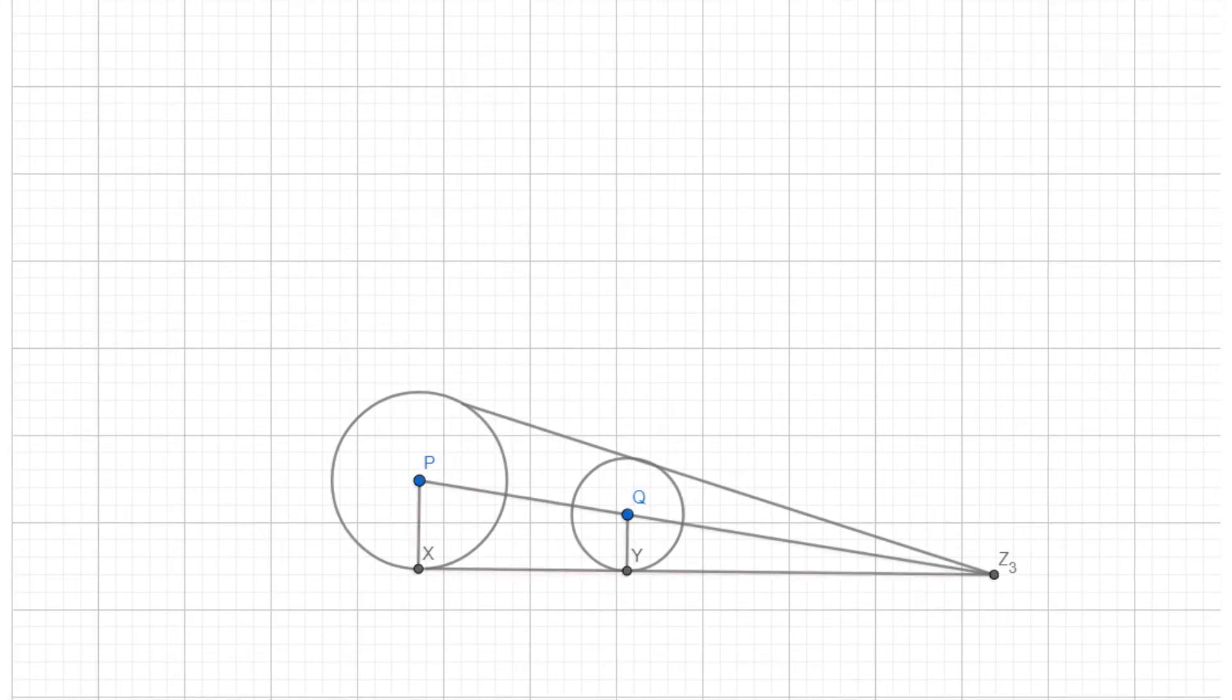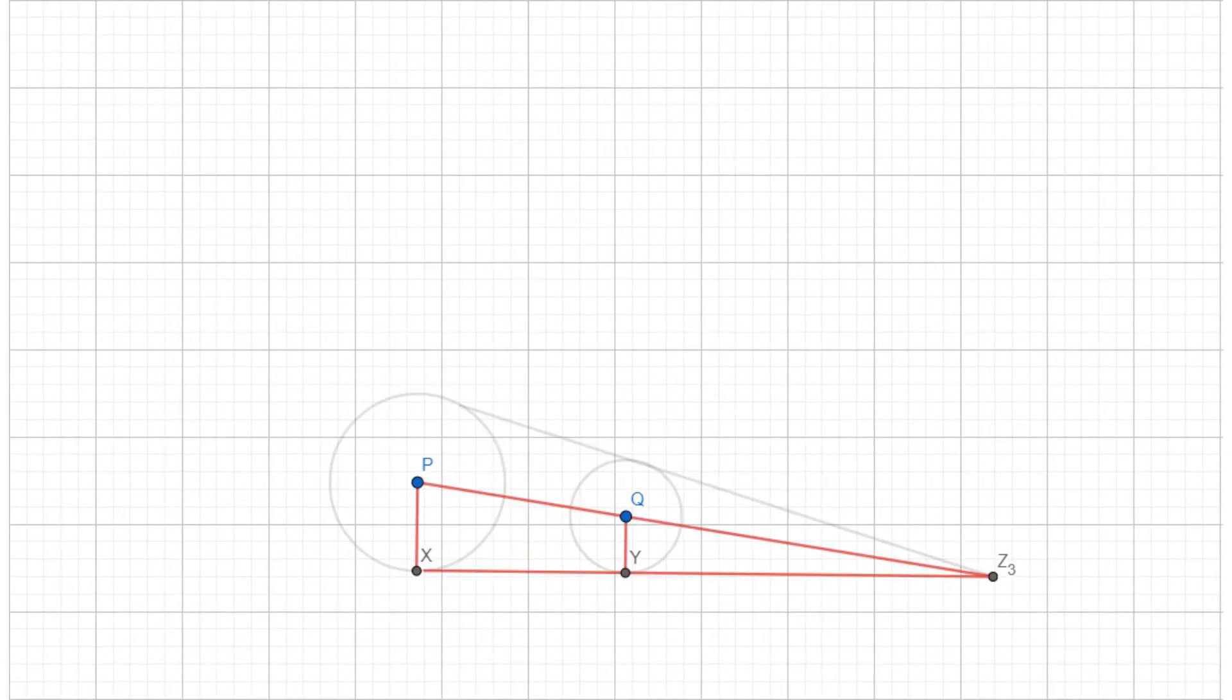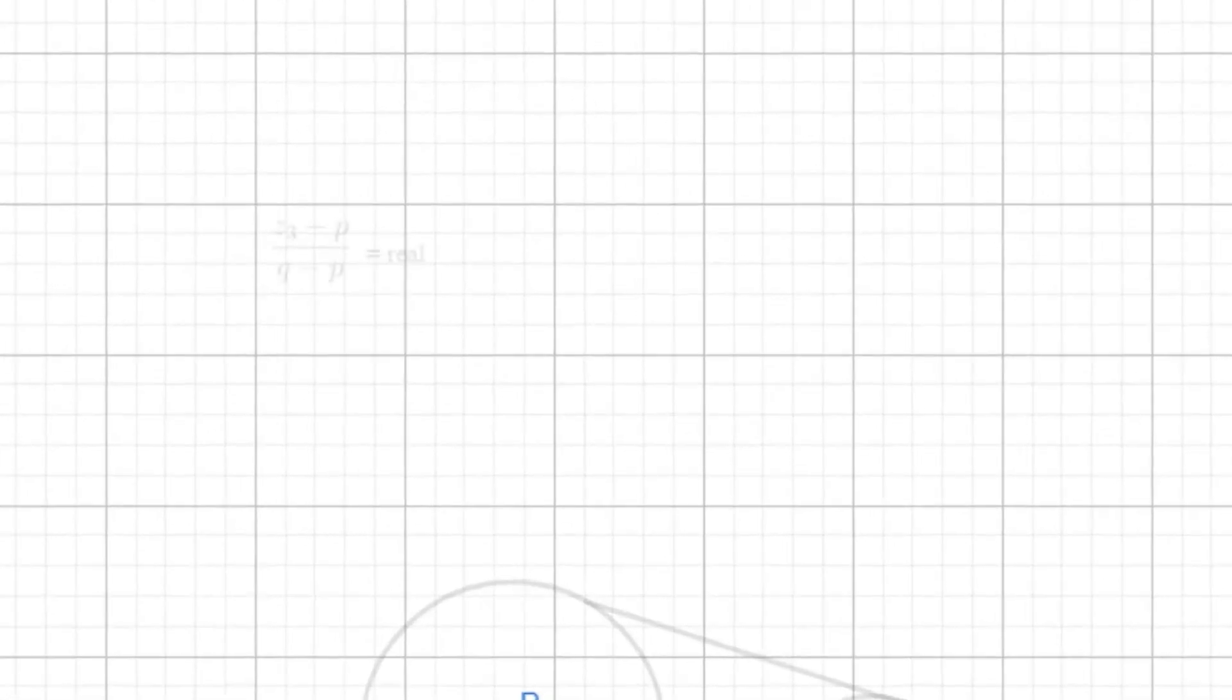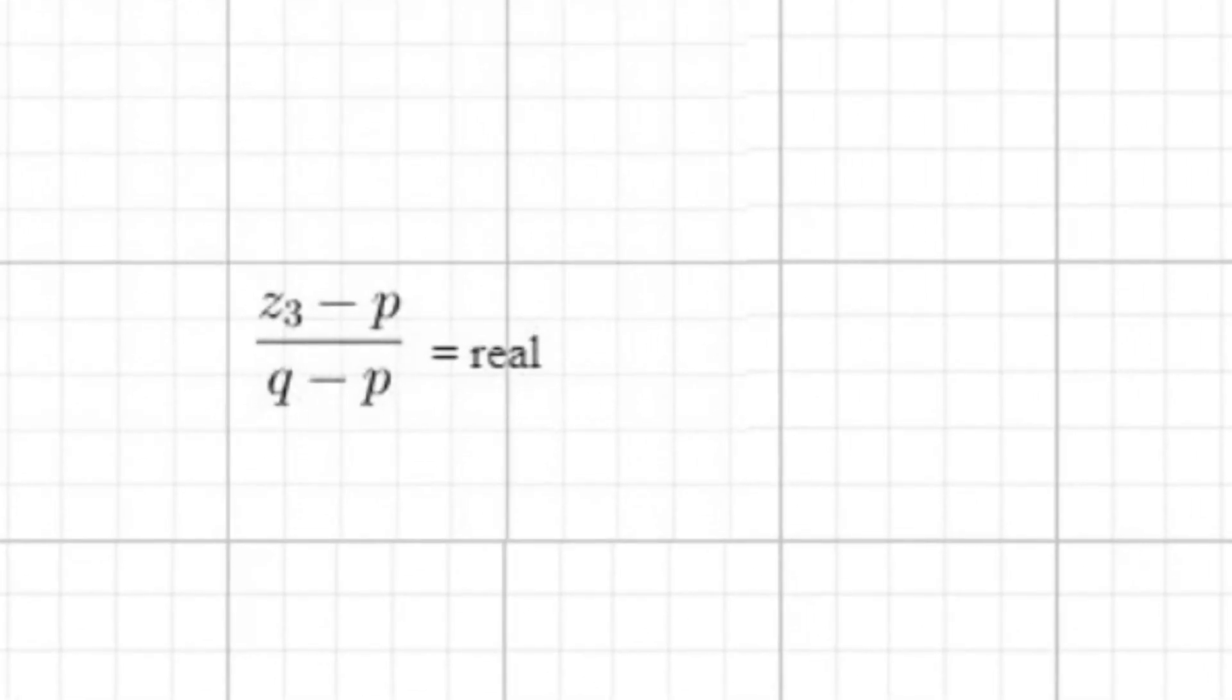Moving on, we turn our attention back to the triangles at hand and label the radii A and B, respectively. Since we know that P, Q, and Z3 are collinear, we know that Z3 minus P over Q minus P is a real number.